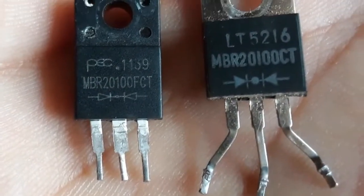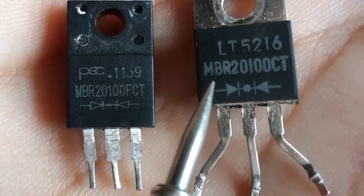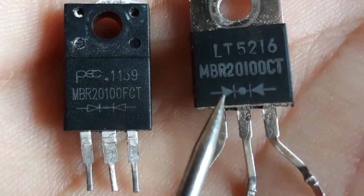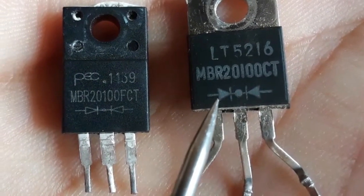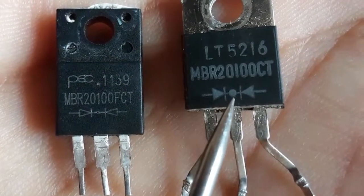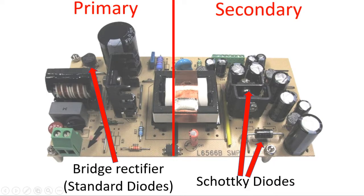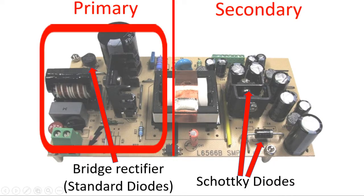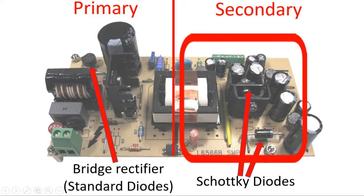Hi everyone. In this video we're going to talk about how to test Schottky diodes. We find normal diodes in the primary stage of every flyback power supply, and Schottky diodes in the secondary stage of any flyback switch mode power supply.